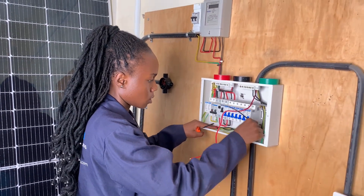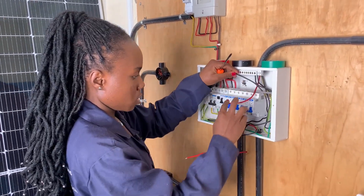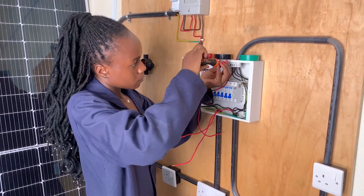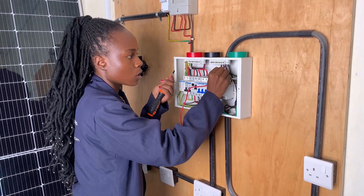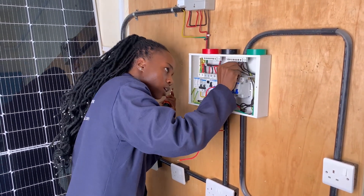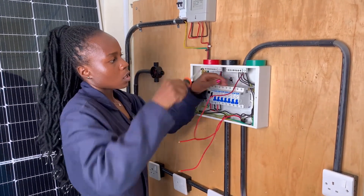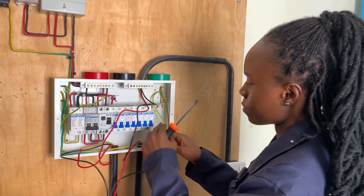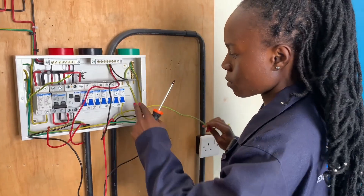Tess is now connecting the neutral to the neutral bar. Longer cables are important in the consumer unit, mainly in case of repairs and because they are easier to work with than shorter cables. For a socket installation, this is especially important because of the many appliances that will be connected. The earth connections have been made on the earth bar and the neutral on the neutral bars.